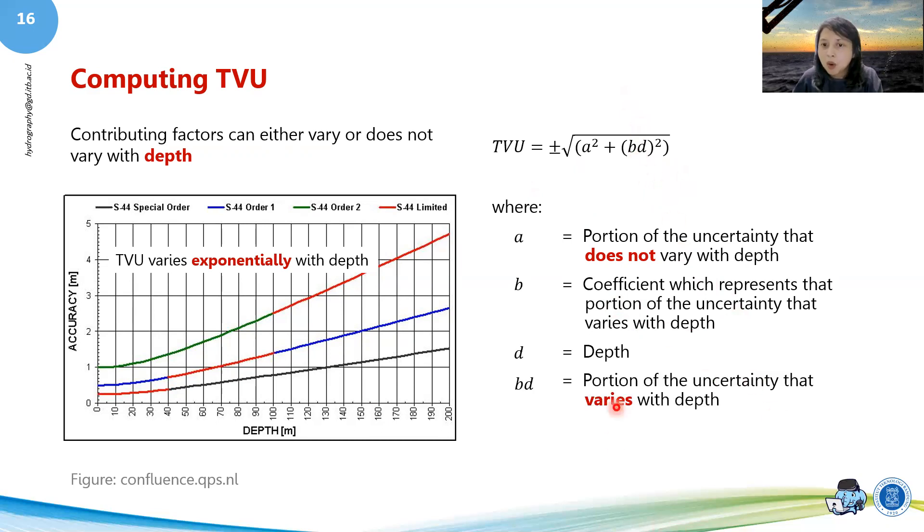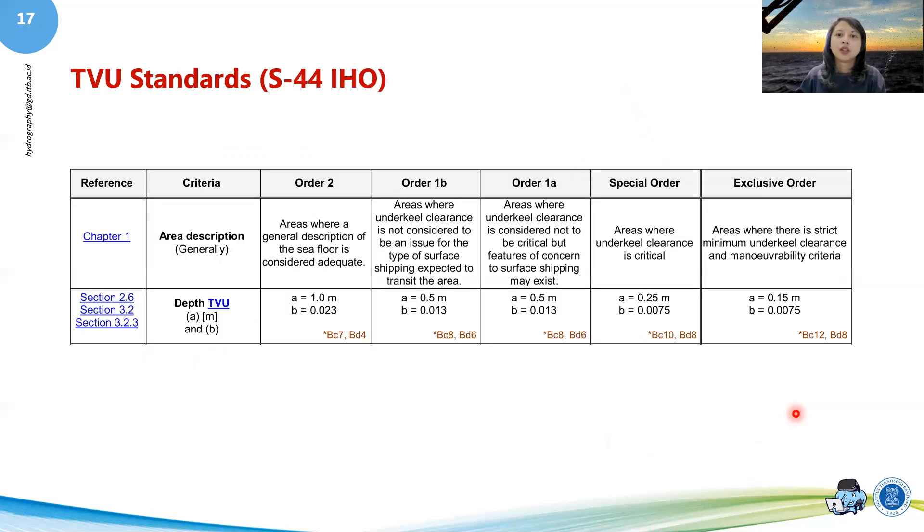How do we actually use this equation? So we will use that equation, for example, if we are doing a survey again in order 1A, then you basically just input A and B into your equation. And the depth itself, it depends on how deep you are actually doing it. So for example, if your D is 25 meters, and then you've got your A and B, then you can actually calculate the maximum TVU in your area.